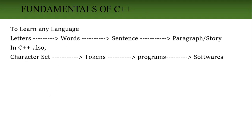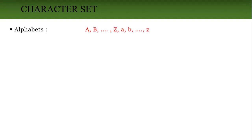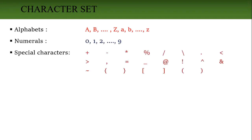Now we will see the character set in C++. Mainly three character sets are there. First, alphabets — it contains both uppercase and lowercase letters, A to Z, all letters. Alphabets come in the character set of C++.